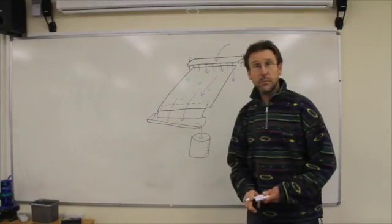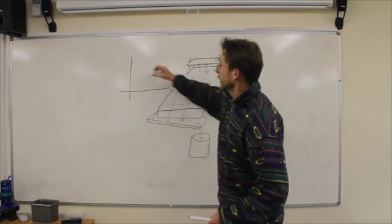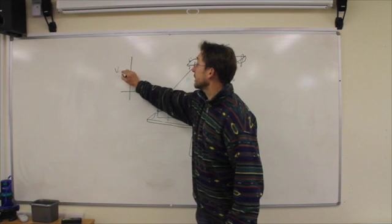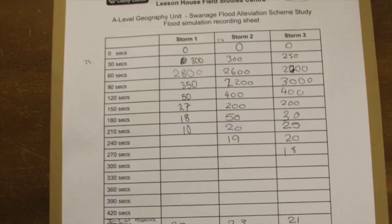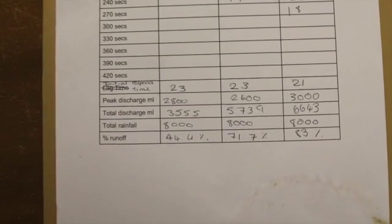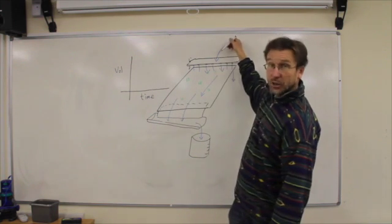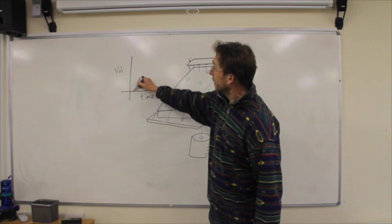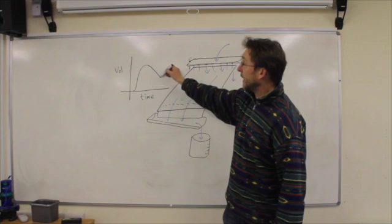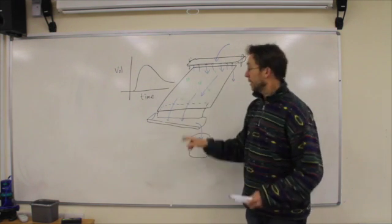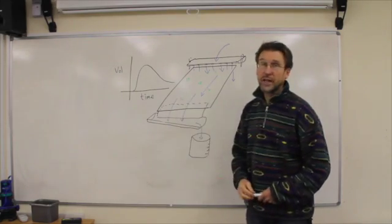You will be able to produce a storm hydrograph like this. The volume of water every 30 seconds and time. You start the pouring, there will be a lag, a delay, between the start of the pouring and water appearing in the river channel. The water will appear in the river channel, it will rapidly increase with discharge, and then it will drop off. And if you plot the volume of water over time, you can create your own hydrograph of your own flash flood.